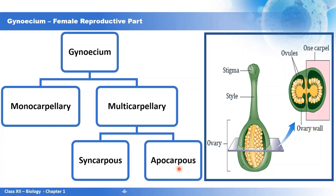The structure of a pistil comprises the basal swollen part known as the ovary, an extension known as the style, to which is attached the stigma — the landing platform for pollen grains. The ovary has a cavity in which ovules are present, and these ovules are attached with the help of the placenta.